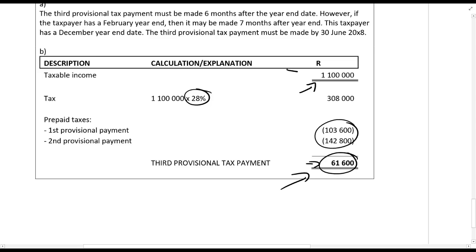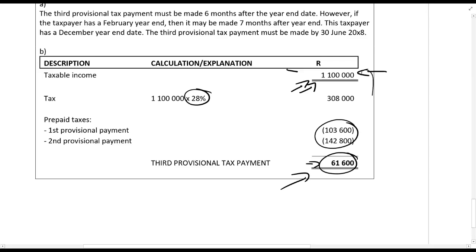So if in your first and your second provisional tax payment you already pay enough, then you don't have to pay in. You can fix it with your second provisional tax payment by doing a proper calculation, or estimating a bit higher if you want to. But usually, for exam purposes, we just look at the minimum amounts like we saw. So guys, the third provisional tax payment, as you can see, is very simple.